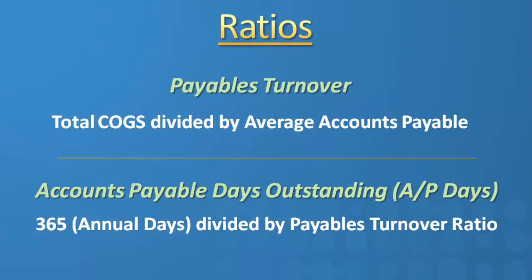The second ratio is the accounts payable days outstanding. We're going to take 365 for the amount of days in a year, divided by the payables turnover ratio. This is going to tell us how many days on average payables turnover each period.